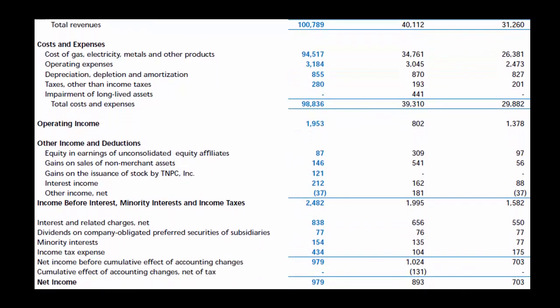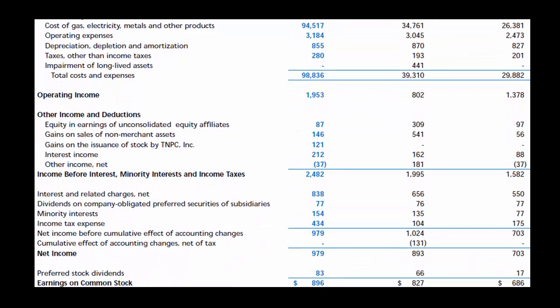Is this company profitable? They've got a lot of sales, but are they profitable? Well, if we look at their net income, they went from $893 million of profit to $979 million of profit. Profit goes up each year — almost $1 billion in profit.